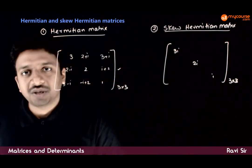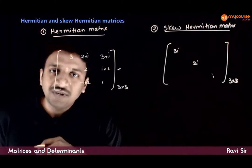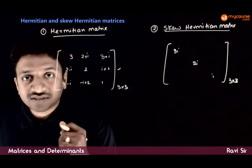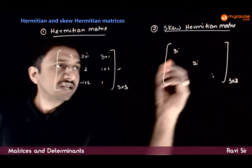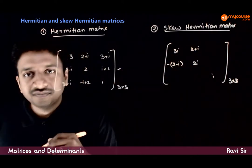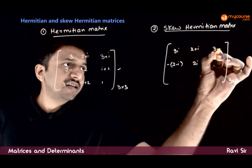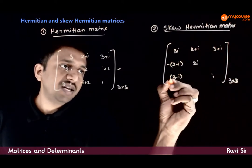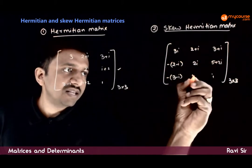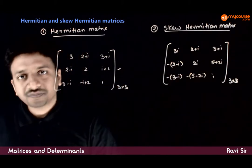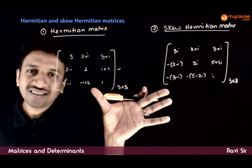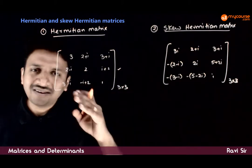This is an example of a Hermitian matrix. For the skew Hermitian matrix, the non-diagonal elements at opposite positions must be negative conjugates of each other. So if one element is 2+i, the opposite is −(2−i); if one is 3+i, the opposite is −(3−i); if one is 5+2i, the opposite is −(5−2i). This is how you construct a Hermitian or skew Hermitian matrix of any order.